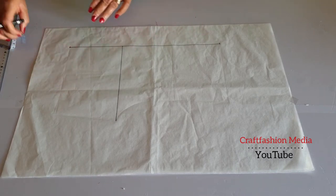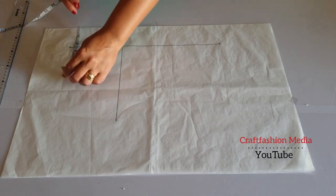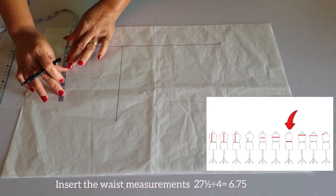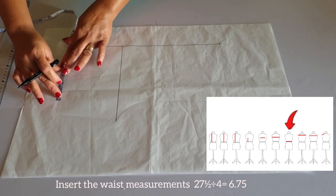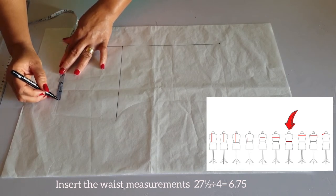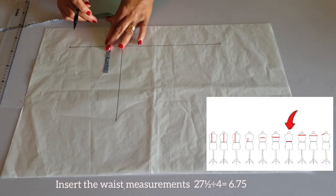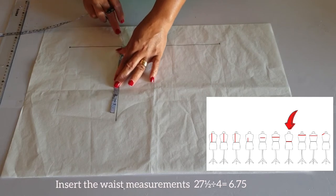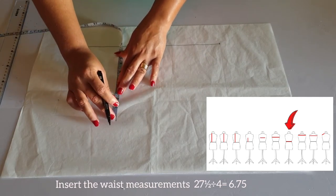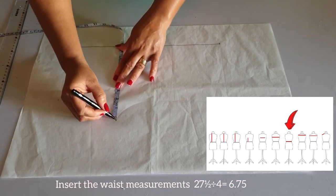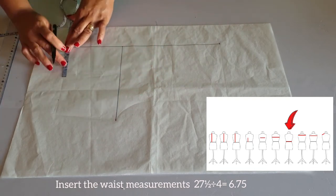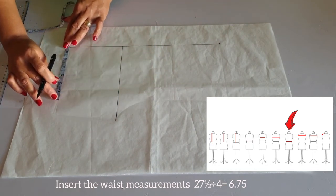So let's insert the waist measurement. I will be squaring a line equal to one quarter of my waist measurement, which is 27 and a half inches divided by 4. That will give me 6.75. And I will make a mark.